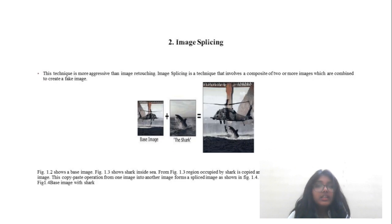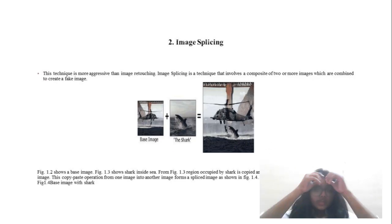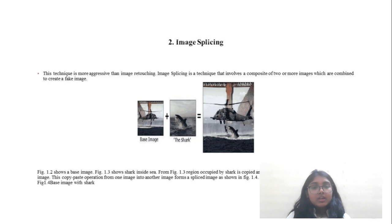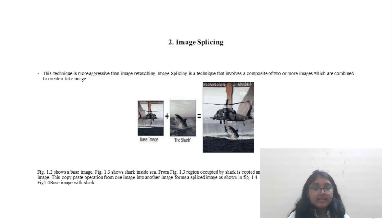Then, Image Splicing. In Image Splicing, we combine two images to make a fake image. As you can see, there is a base image of a helicopter, and we add a shark to the image. So our result is that the shark and the helicopter appear in the same image.